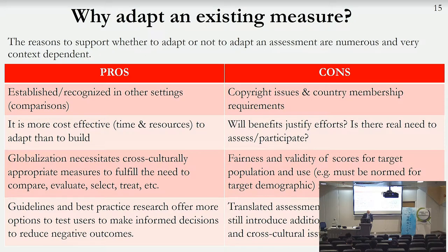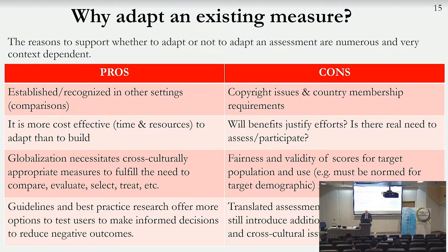Translated assessments, even with adaptation, can introduce negative psychometric and cross-cultural issues. For example, the SAT is the primary college admissions measure in the United States and is given all over the English-speaking world, including the Caribbean. Back in the 1960s, there was a reading test section on ice skating. In the Caribbean, the waters don't freeze often and students knew nothing about ice skating, so there were huge differences in performance because they lacked the requisite knowledge to comprehend the paragraphs.